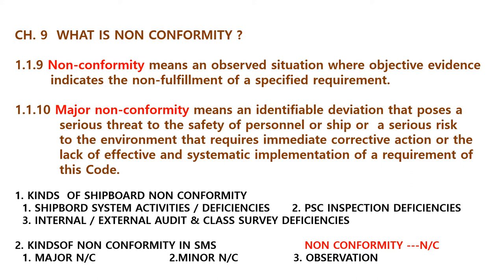How many kinds of nonconformity are there on board? We say three. Number 1.1: Shipboard system activities deficiency. When you carry out a system activity on board and find deficiencies, we call that a shipboard system activity deficiency.